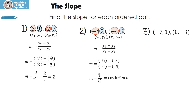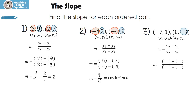Let's look at number 3. I labeled them, and here's my formula. Let's substitute: y2 is negative three, y1 is one, x2 is zero, x1 is negative seven. Negative three minus one is negative four, and zero minus a negative seven is seven. We write it as negative four sevenths — that's our slope.